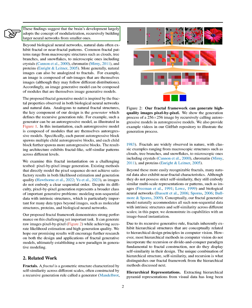We observe that fractals or near-fractals are common in biological neural networks, with studies showing that the brain structure often follows a modular approach, building larger networks from smaller ones. Additionally, natural data frequently displays fractal patterns, from large structures like clouds and trees to tiny ones like crystals and proteins. Natural images can also be seen as fractals, as they consist of smaller images that may follow different distributions.